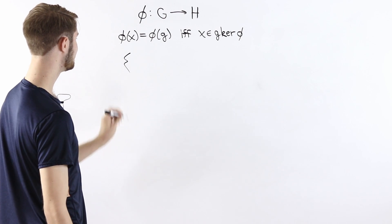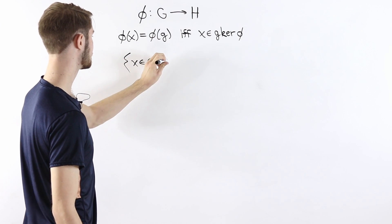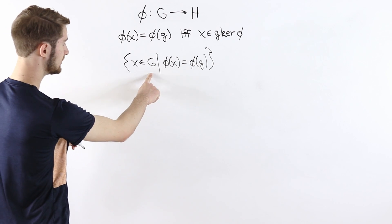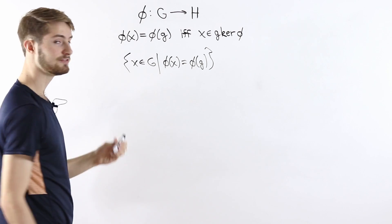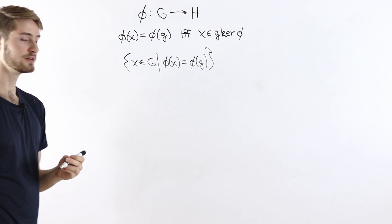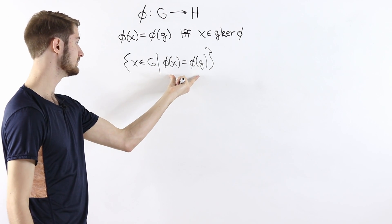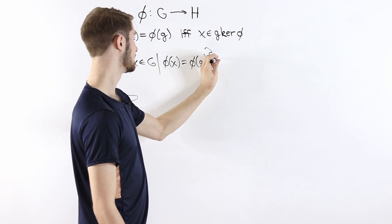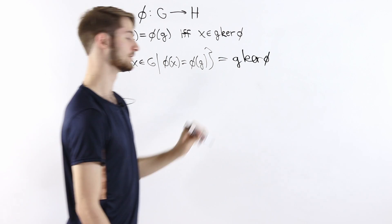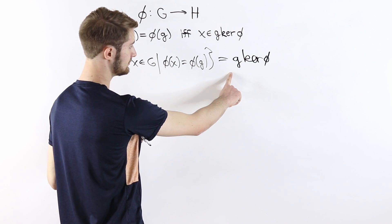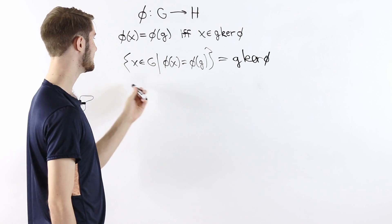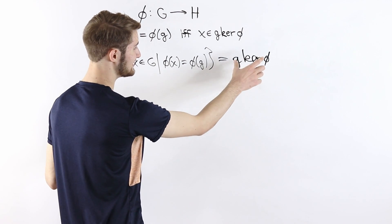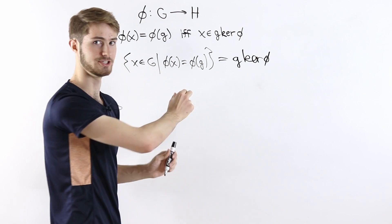Now let's consider the set of all elements x in the group G such that phi of x equals phi of g. An element satisfies phi of x equals phi of g if and only if it's an element of g times the kernel of phi. So the set of all such x is the same as g times the kernel of phi. Each of these cosets g times the kernel of phi is a set of elements in the group that all have the same output — it's exactly the set of elements in G that map to phi of g.